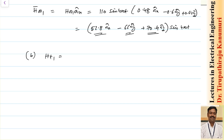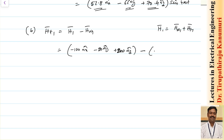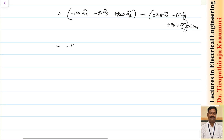For the tangential component Ht1, any vector has two components: normal and tangential, so H1 = Hn1 + Ht1. Therefore Ht1 = H1 minus Hn1. Substituting: (-100 ax - 50 ay + 200 az) minus (52.8 ax - 66 ay + 70.4 az), all multiplied by sin(400t), gives Ht1 = (-152.8 ax + 16 ay + 129.6 az) sin(400t).